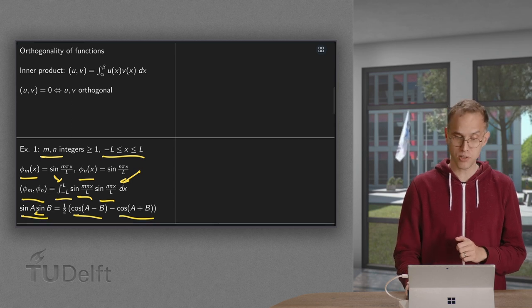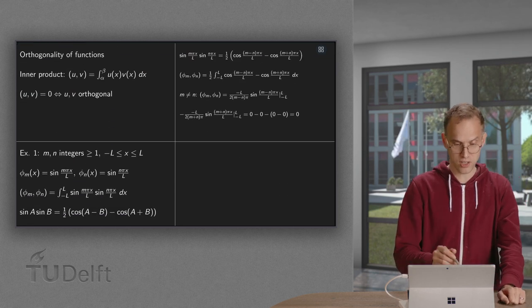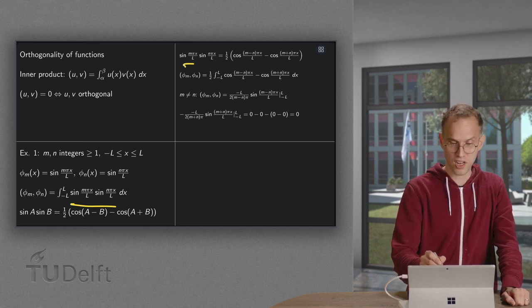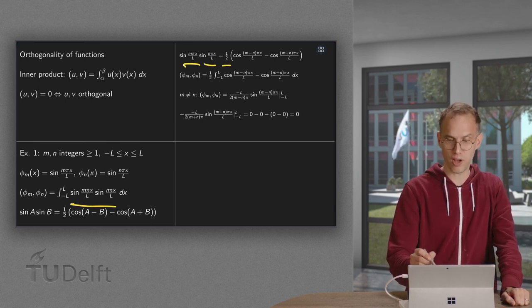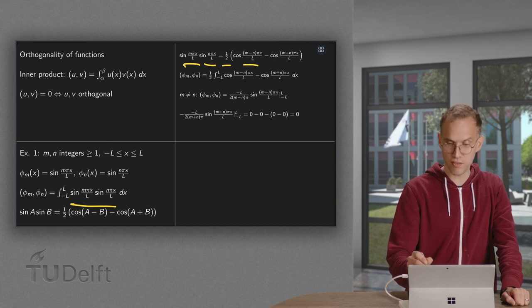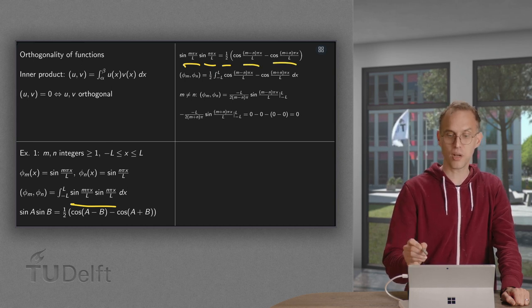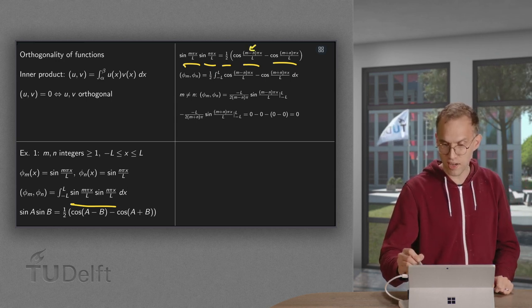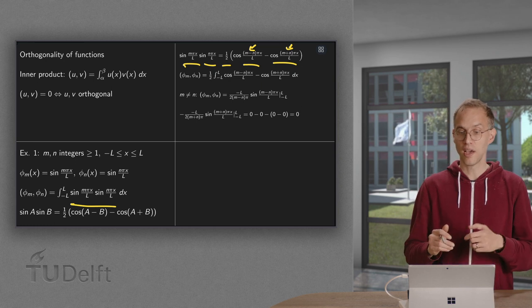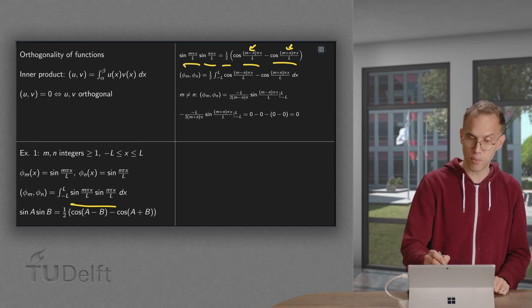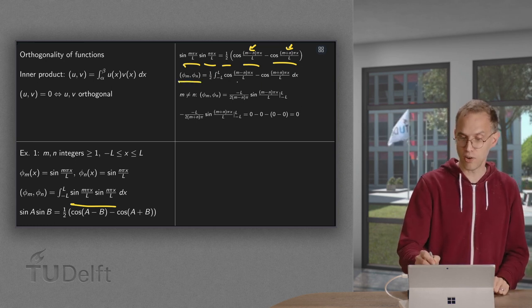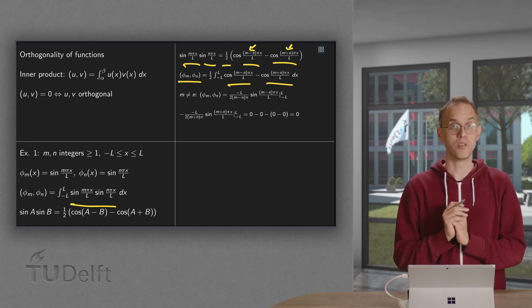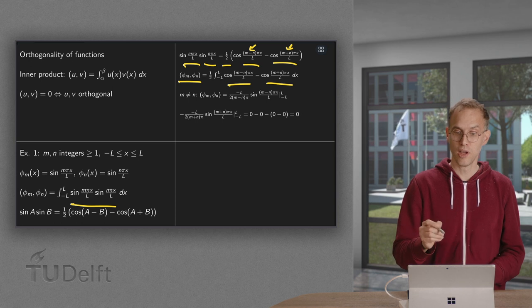And now we can use this to integrate this function. Because sine times sine equals one-half cosine of the difference minus cosine of the sum of the arguments. That means that you get a difference m minus n and a sum m plus n. And now the inner product is just an integral over two cosines. And we can compute the antiderivatives.